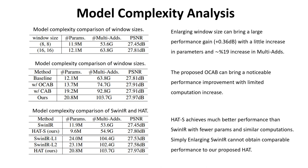We present model complexity analysis here. From the first table, enlarging window size brings a larger performance gain with a little increase in parameters and MACs. For the second table, the proposed OCAB brings noticeable performance improvement with limited computation increase. In the last table, the small variant of HAT achieves much better performance than SwinIR with fewer parameters and similar computations. Besides, simply enlarging SwinIR cannot obtain comparable performance to our proposed HAT.